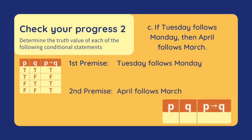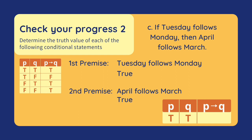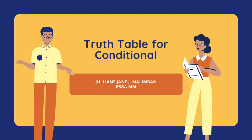Let's have a last one. If Tuesday follows Monday, then April follows March. Our first premise is 'Tuesday follows Monday.' This is true because Monday comes before Tuesday. Our second premise is 'April follows March.' This is also true because March comes before April. Since both our premises are true, our conditional is also true. I hope you learned a lot from my report about the truth table for the conditional.